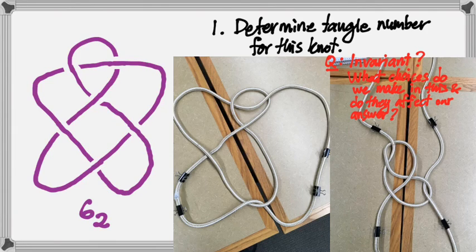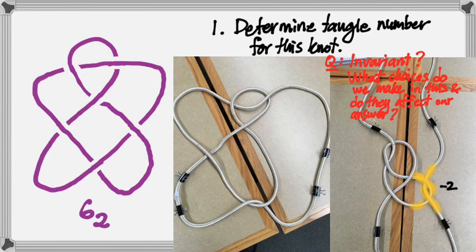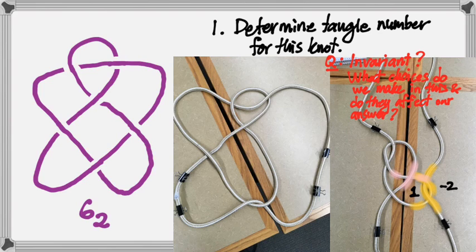Doing it this way, we're able to isolate here on the right side this crossing. We decided that was a negative two. And then there's a crossing here in the middle, which was a positive one.